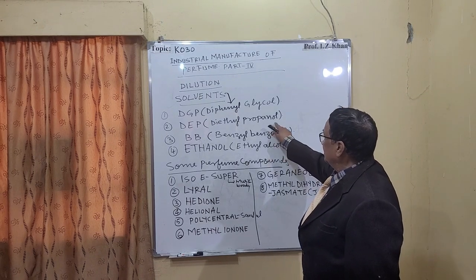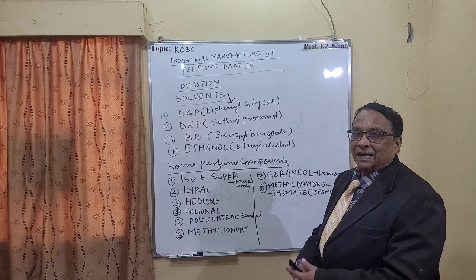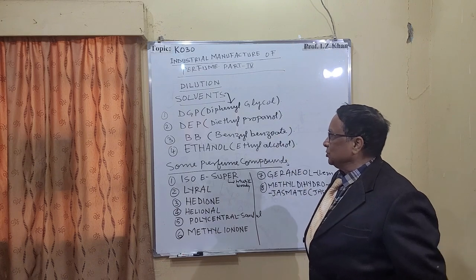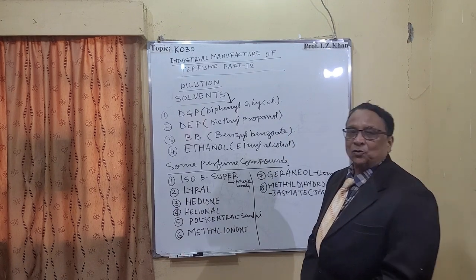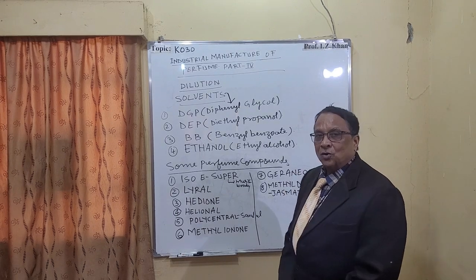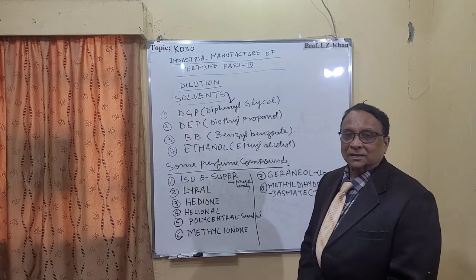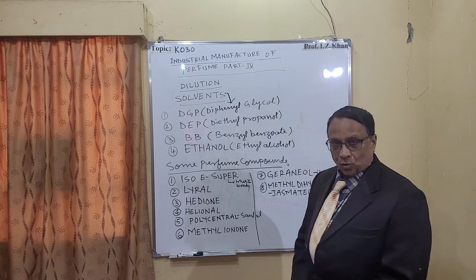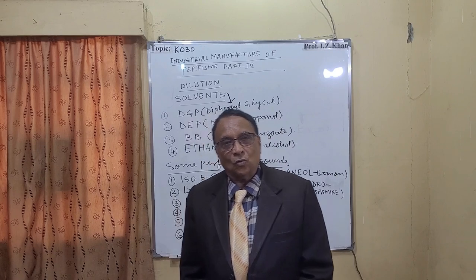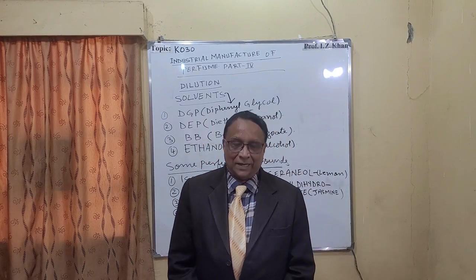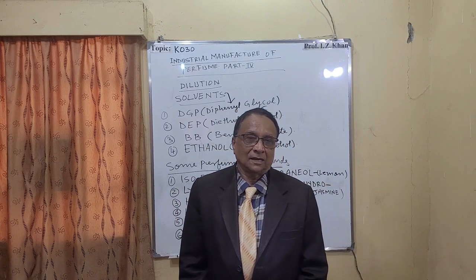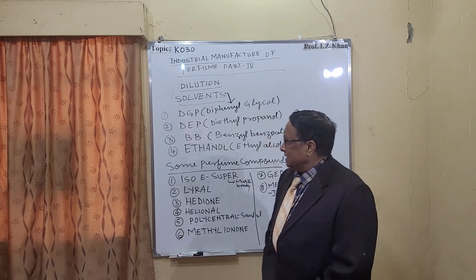Then BB, that is benzyl benzoate. Benzyl benzoate is also used as a solvent and is widely used as a preservative in food industries. The very well-known solvent after water - the universal solvent - is ethyl alcohol. So these are four types of solvents used globally to manufacture different types of perfumes.